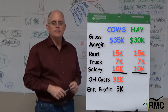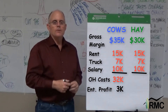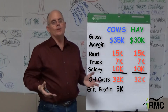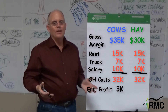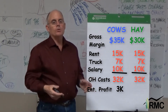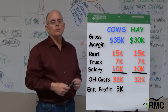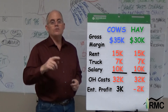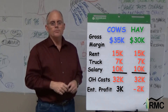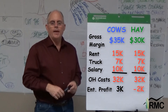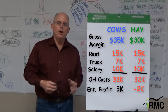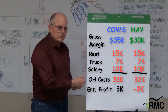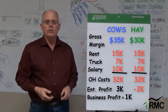Let's see how the hay did. $15,000 plus $7,000 plus $10,000 is still $32,000, but this time we're subtracting it from the gross margin of $30,000. That's negative $2,000 — the hay enterprise made a $2,000 loss. Overall, my business made a profit of $1,000.